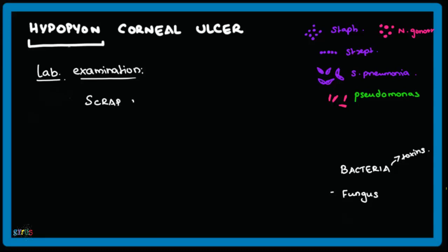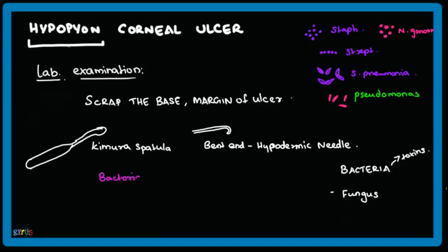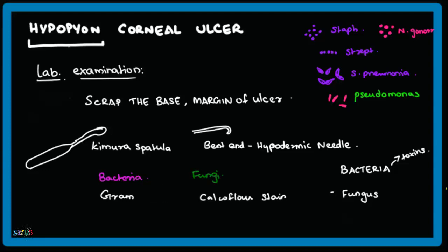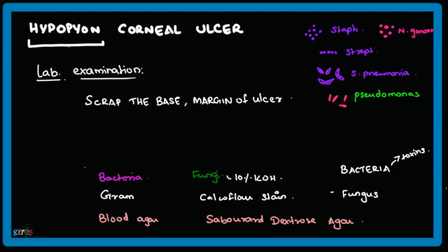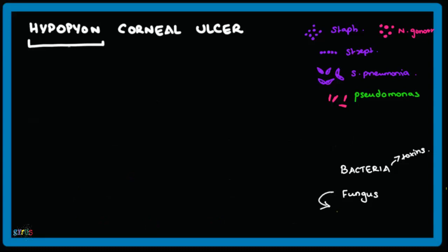Lab investigations include scraping the base and margins of the ulcer using a Kimura spatula, or alternatively the bent end of a hypodermic needle. In case of bacteria, we generally do gram staining; for fungi, calcofluor white stain is used, along with 10% KOH (potassium hydroxide) solution. We also do blood agar and Sabouraud dextrose agar culture. For bacteria, gram stain will be positive; for fungi, calcofluor stain will be positive. Fungal organisms which cause corneal ulcer include Aspergillus, Fusarium, and Candida.